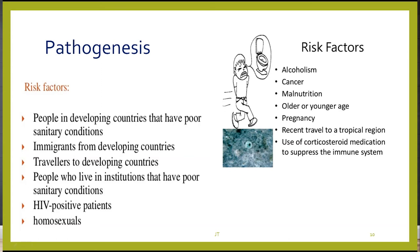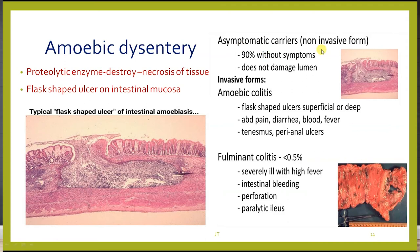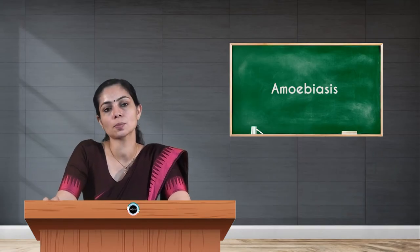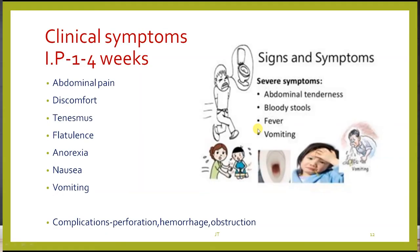Amoebiasis is common in people living in developing countries with poor sanitary conditions, immigrants, travelers, institutionalized individuals, HIV-positive patients, and homosexuals. In 90 percent of people, the infection is non-invasive and asymptomatic. However, in some people it leads to amoebic colitis, where flask-shaped ulcers form — superficial or deep — due to proteolytic enzymes released by the parasite causing tissue necrosis. Less than 0.5 percent develop fulminant colitis with high fever, intestinal bleeding, and perforation.